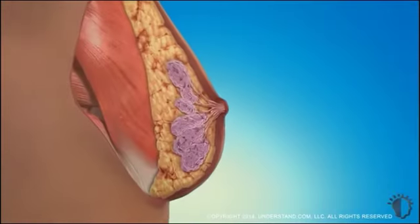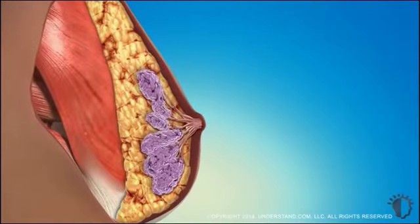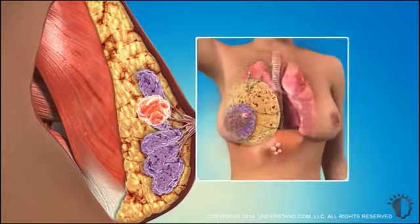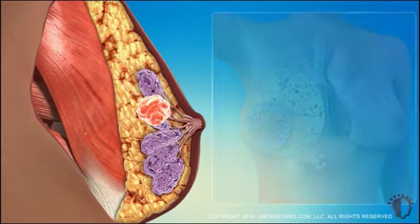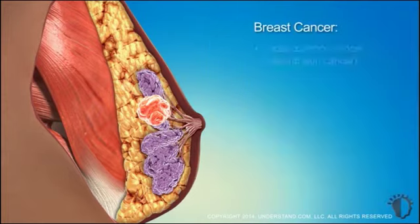Breast cancer is a disease in which certain cells in breast tissue grow uncontrollably. A tumor, which may or may not be felt as a lump, can result. If undetected, cancer may spread to other areas of the body. With the exception of skin cancer, breast cancer is the most common cancer among women.